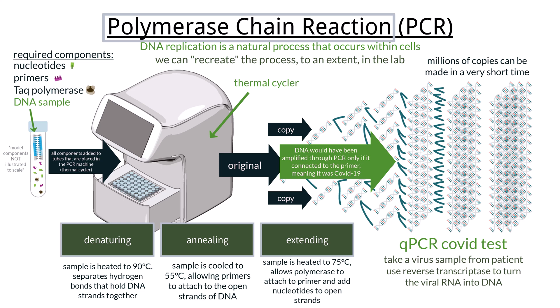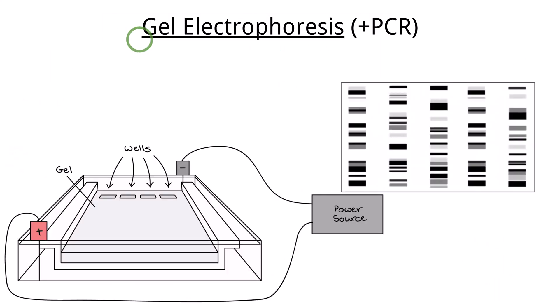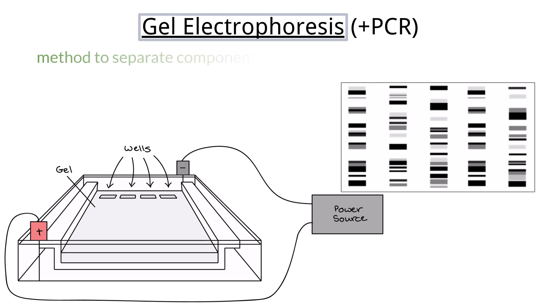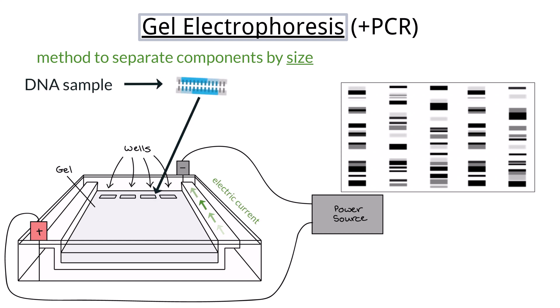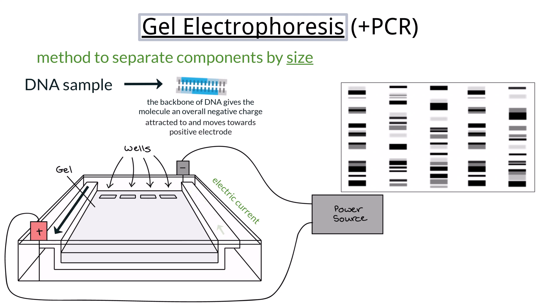Aside from identifying virus components, PCR has other use cases when paired with other lab machinery. Gel electrophoresis is another process that, when paired with PCR, has many use cases. Gel electrophoresis is a technique used to separate proteins or fragments of DNA according to size. Samples are placed in a block of gel and an electric current is applied, which causes the samples to move through the gel. The phosphate group in DNA's backbone causes it to be negatively charged overall, and this negative charge is attracted to the positive electrode side of the electrophoresis machine, which pulls it through the gel.